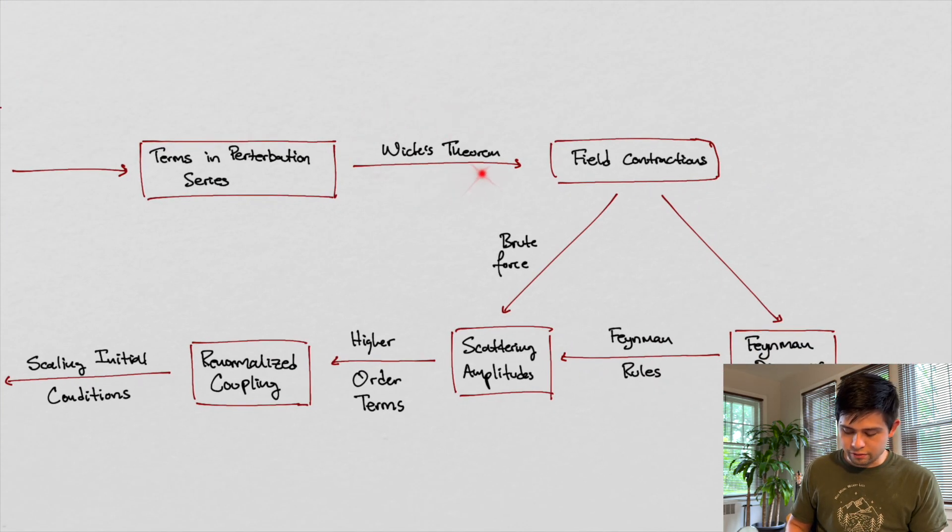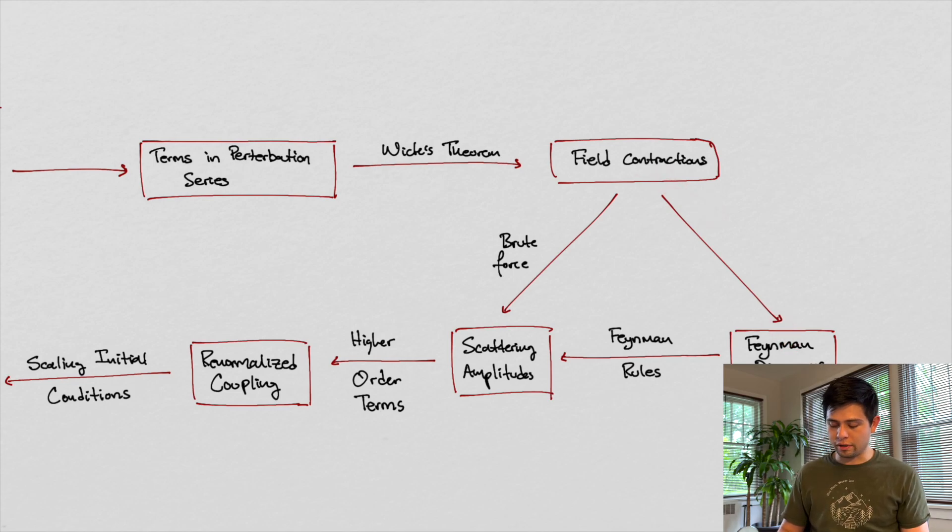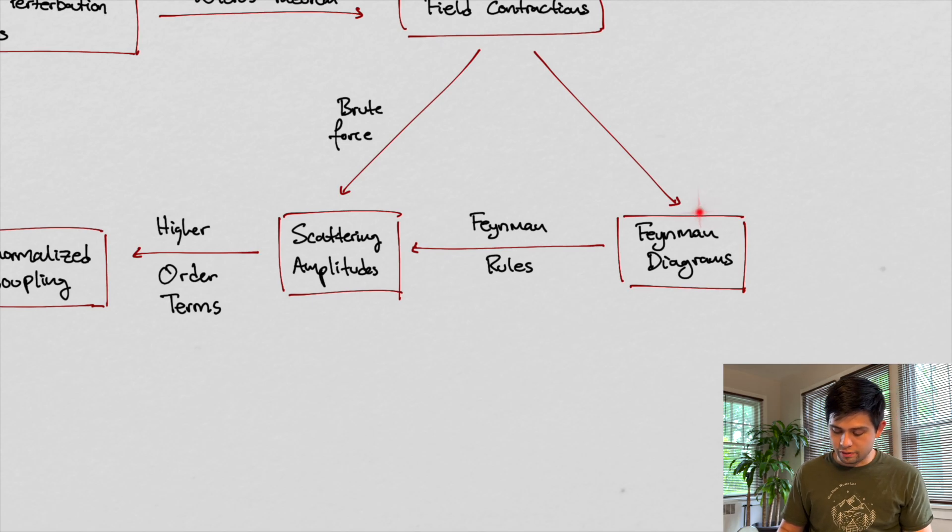So by means of Wick's theorem, we were able to get field contractions, right? So when we apply Wick's theorem, we were able to get field contractions. So these were all the important contractions that we talked about. And so from the field contractions, we could then use brute force and calculate some scattering amplitudes, or we could take the easy way, or the easier way, and use Feynman diagrams, right? From the Feynman diagrams,